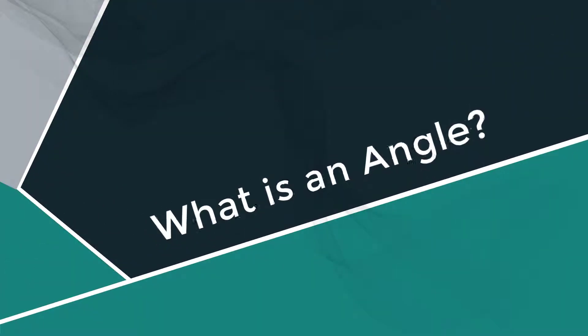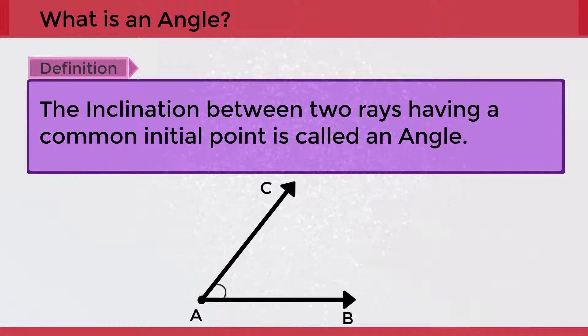What is an angle? Definition: The inclination between two rays having a common initial point is called an angle.